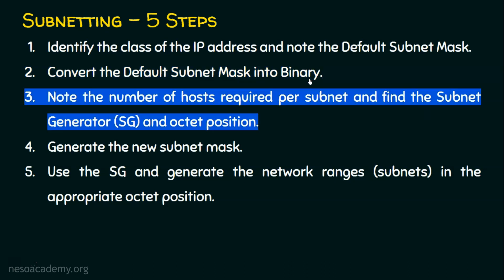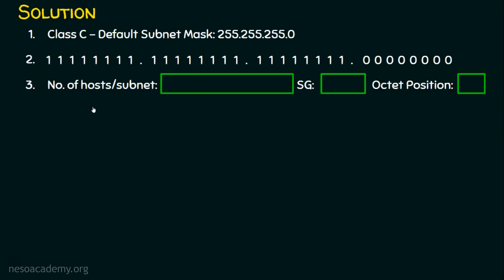Step number three: we need to know the number of hosts required per subnet and find the subnet generator and the octet position. The number of hosts required per subnet is given in the question — it is 52. In order to find the subnet generator and octet position, we first convert the decimal number 52 into its binary equivalent, which gives us 110100.